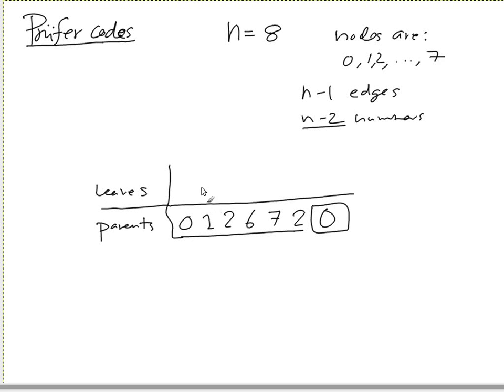So the missing thing are the sequence of leaves that we delete in each round to produce the Prüfer code.